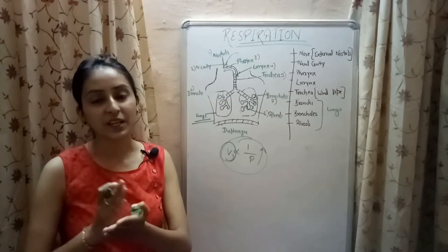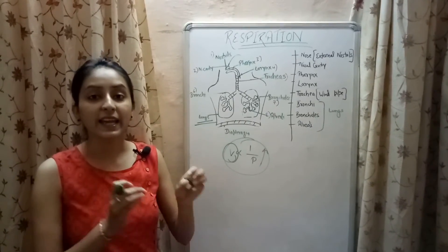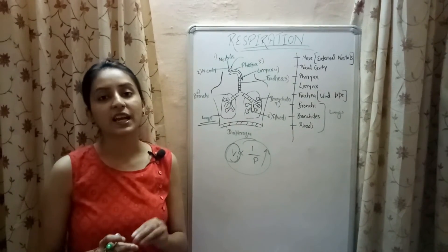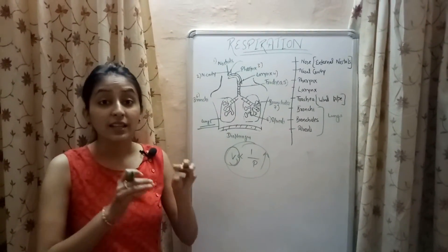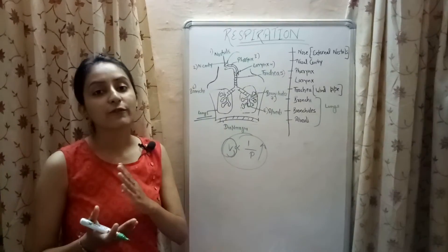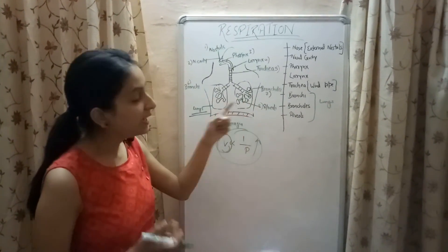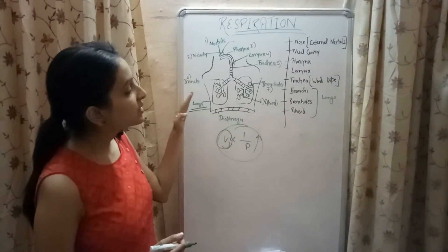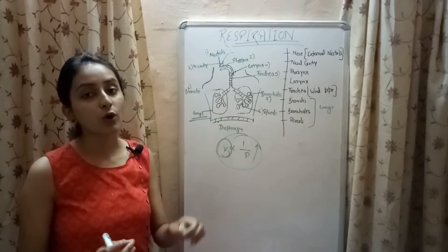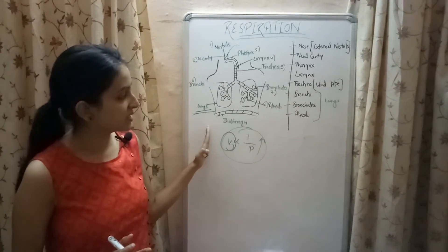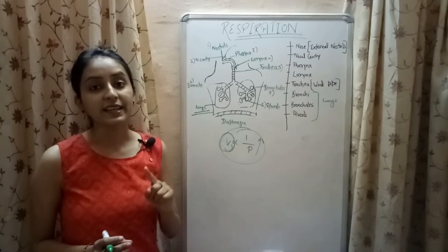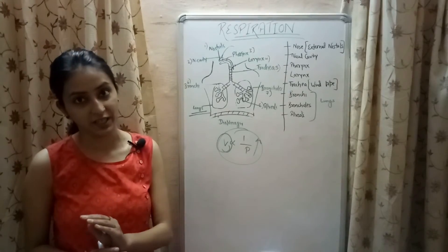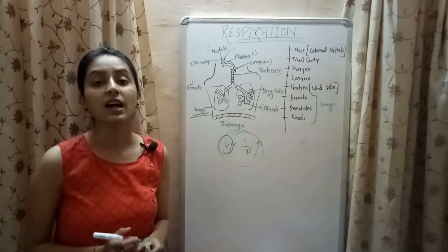The oxygen taken in by the body is utilized to break down food, and the energy released is stored in the form of ATP by the body cells. The carbon dioxide produced as a result of respiration passes into the bloodstream, and from the bloodstream it reaches the alveoli. When we breathe out, the carbon dioxide is released into the atmosphere. The average rate of breathing in a human adult is 12 to 16 times per minute, but in infants it is 44 times per minute.